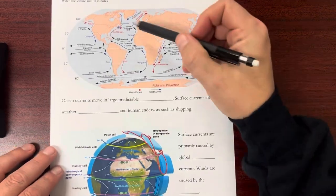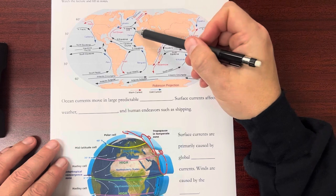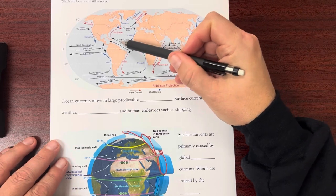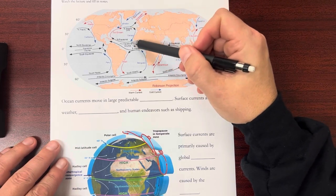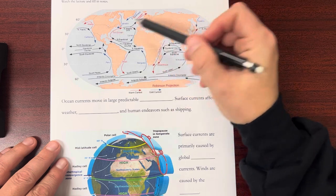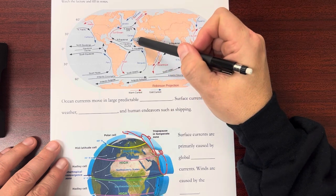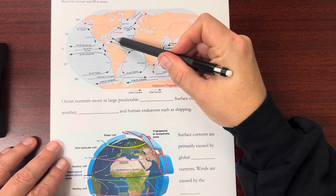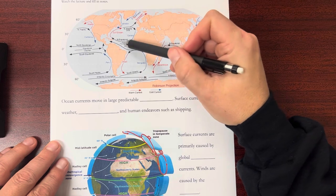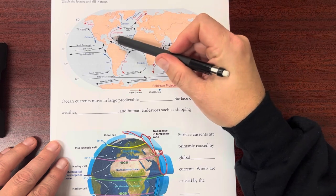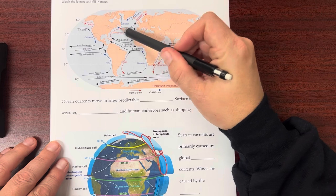And it was actually before our modern world the currents were used to safely or more quickly get across from Europe to America. You can see if they come down through this canary current and then across it was easier to go with the current going from Europe to North America this way and then vice versa coming back.